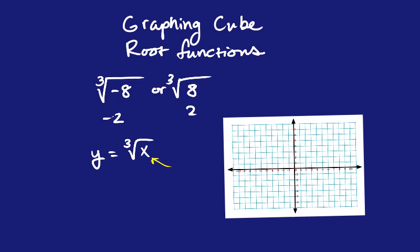So when we make a table for this, you're going to actually need both positives and negatives. And you want to pick perfect cubes. For those who don't remember what perfect cubes are, I'll write down a few. But you're really only going to want to use a couple of them.